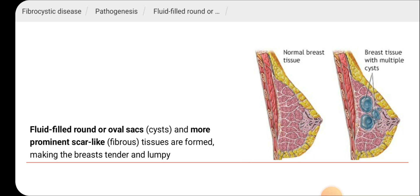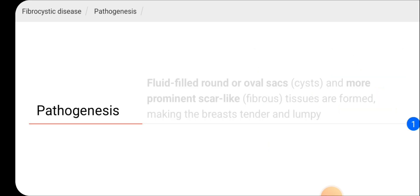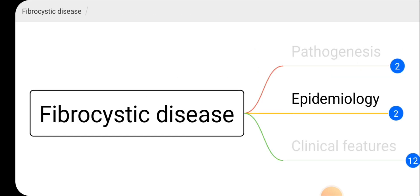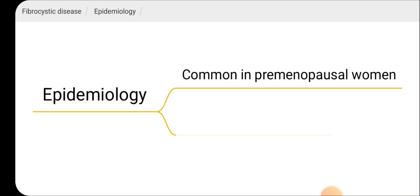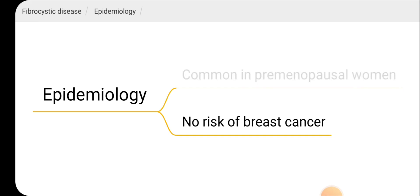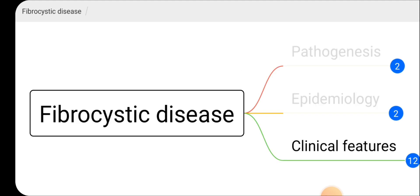This is the pathophysiology which occurs in fibrocystic disease. Regarding epidemiology, it is a common breast pathology occurring more commonly in pre-menopausal women. It has no risk of breast cancer. You should know these two facts regarding the epidemiology of fibrocystic disease.